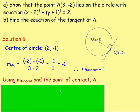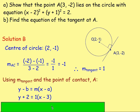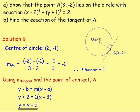Using the gradient of the tangent (1) and the point of contact A(3, −2) in the gradient–point equation: y − (−2) = 1(x − 3), which is y + 2 = x − 3. Subtract 2 from both sides to get y = x − 5, or equivalently y − x = −5. Write it in whichever simplified form you prefer.